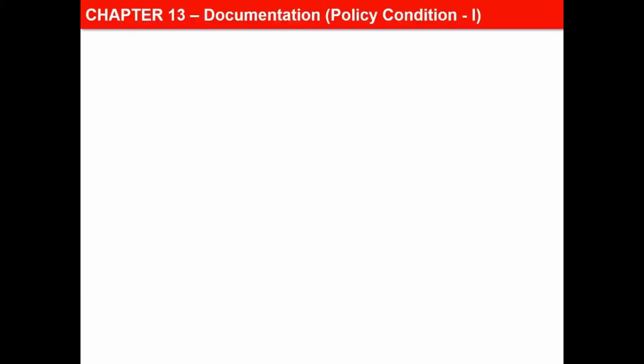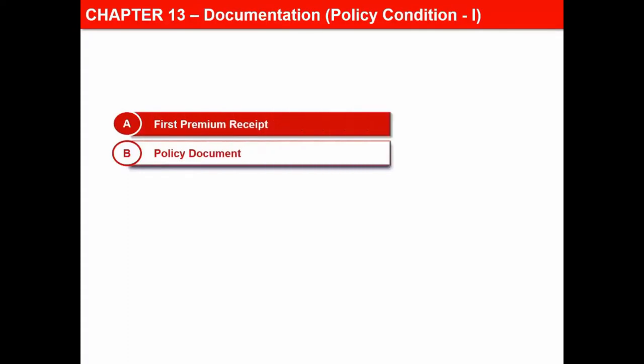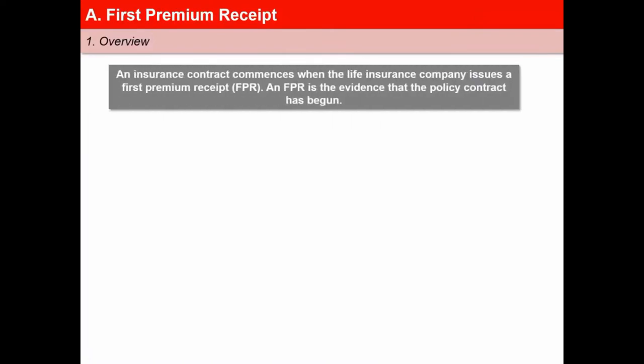Let us begin with understanding the concept called first premium receipt. An insurance contract commences when the life insurance company issues a first premium receipt, FPR. An FPR is the evidence that the policy contract has begun.